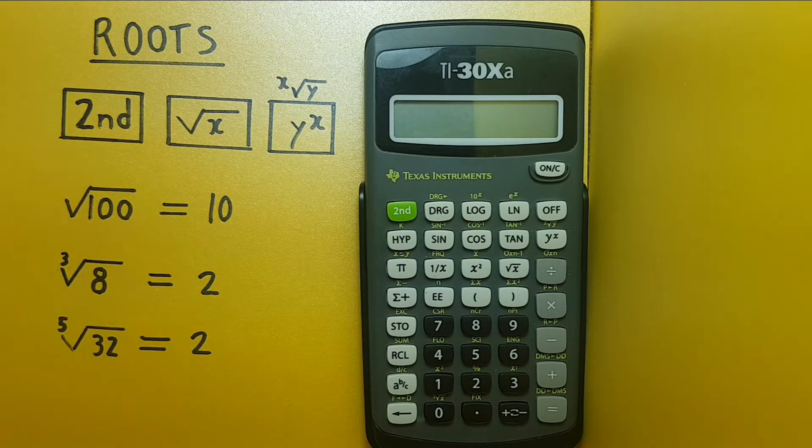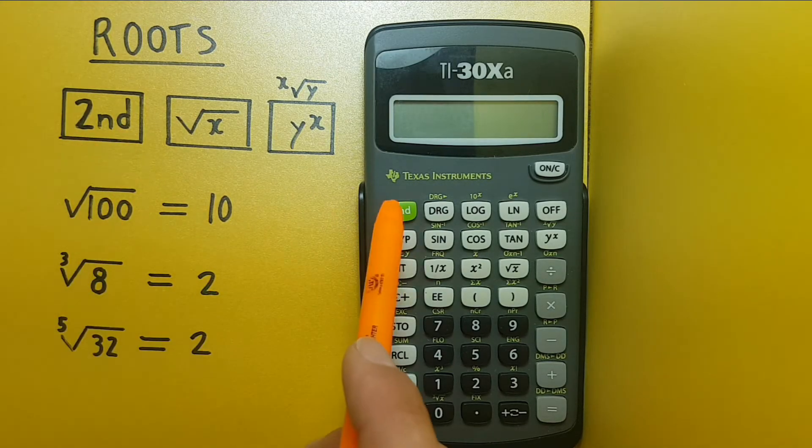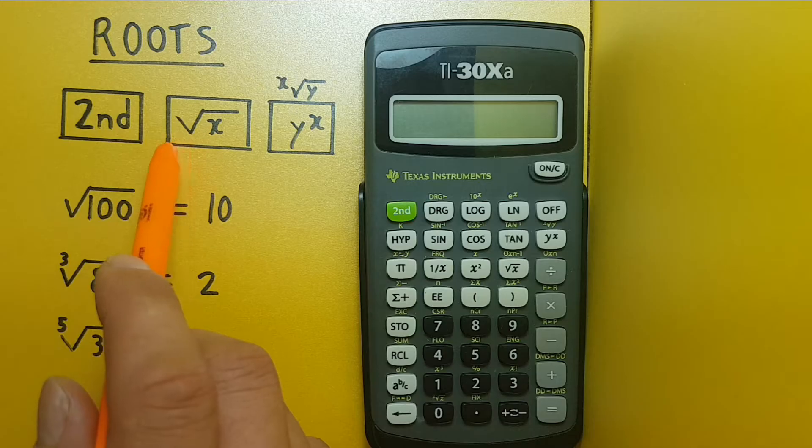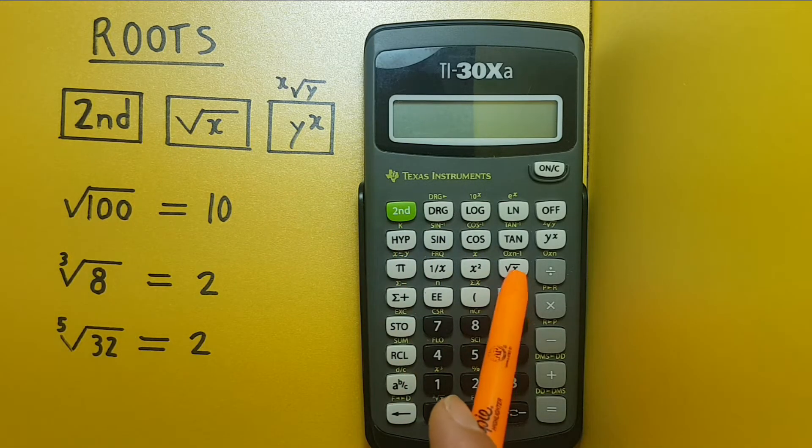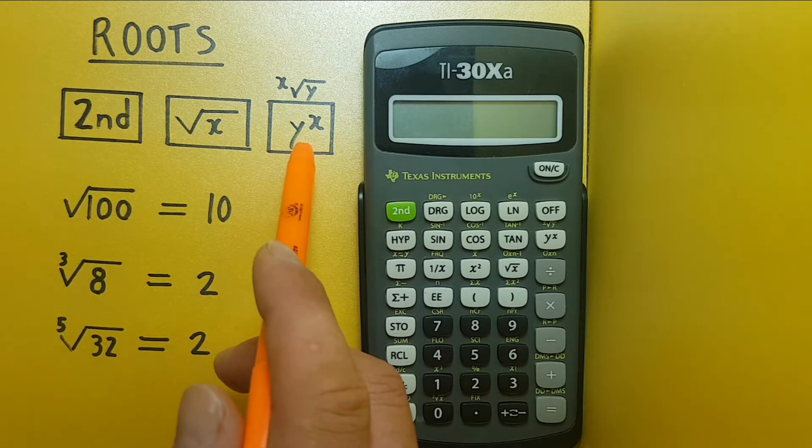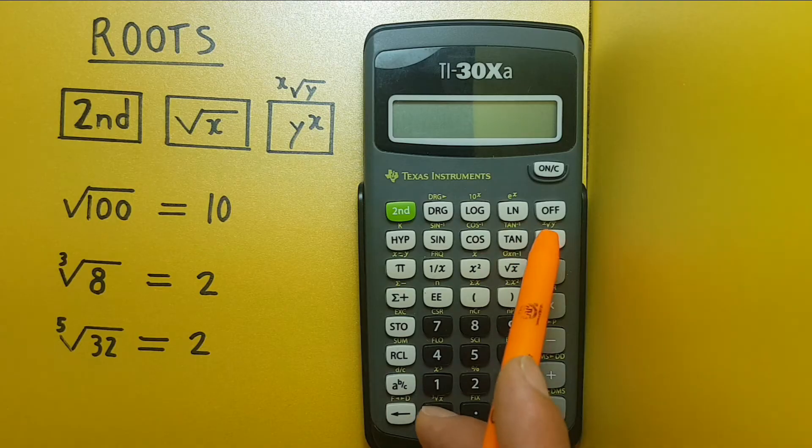To do this we'll be using three keys. The second function key that looks like this and is located here. The square root key that looks like this and is located here. And the Y to the X with the second function of the X root key located up here.